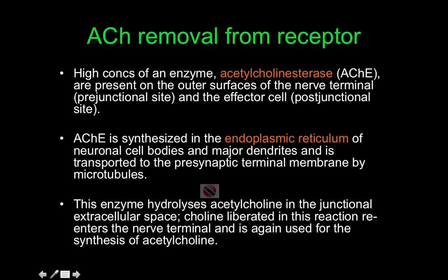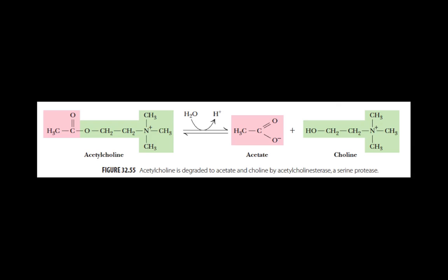AChE hydrolyzes acetylcholine in the junctional extracellular space. Choline liberated in this reaction re-enters the nerve terminal and is again used for the synthesis of acetylcholine. So to be precise: AChE does not simply break down acetylcholine — it hydrolyzes it. The reaction is a hydrolysis that yields acetate plus choline, as shown in the color-coded diagram where the acetyl group is in pink and the choline group is in green.